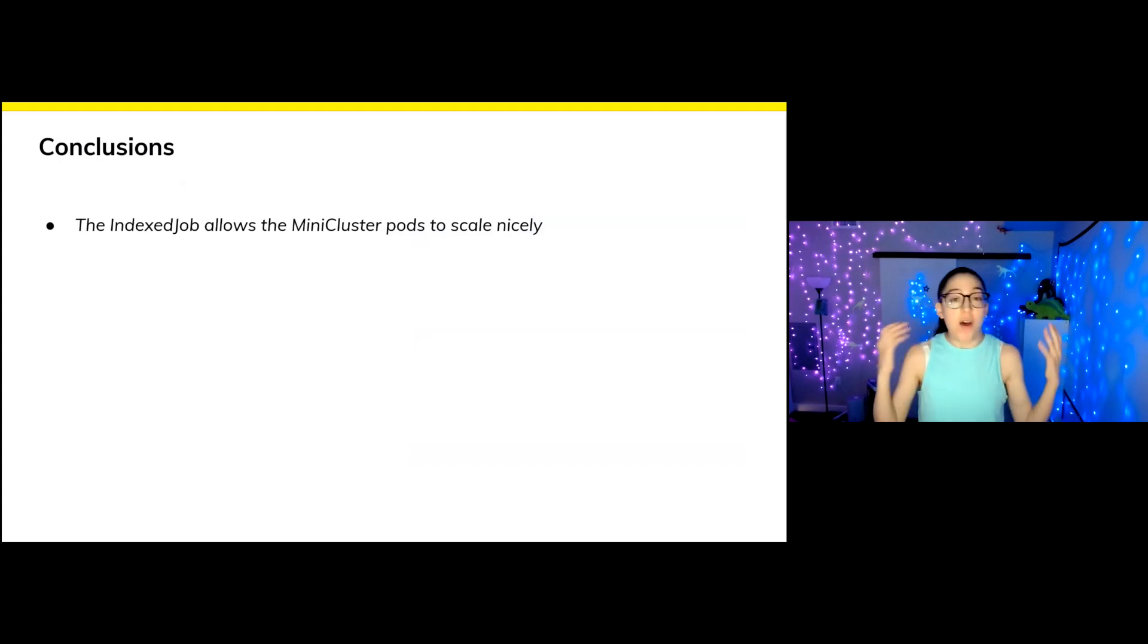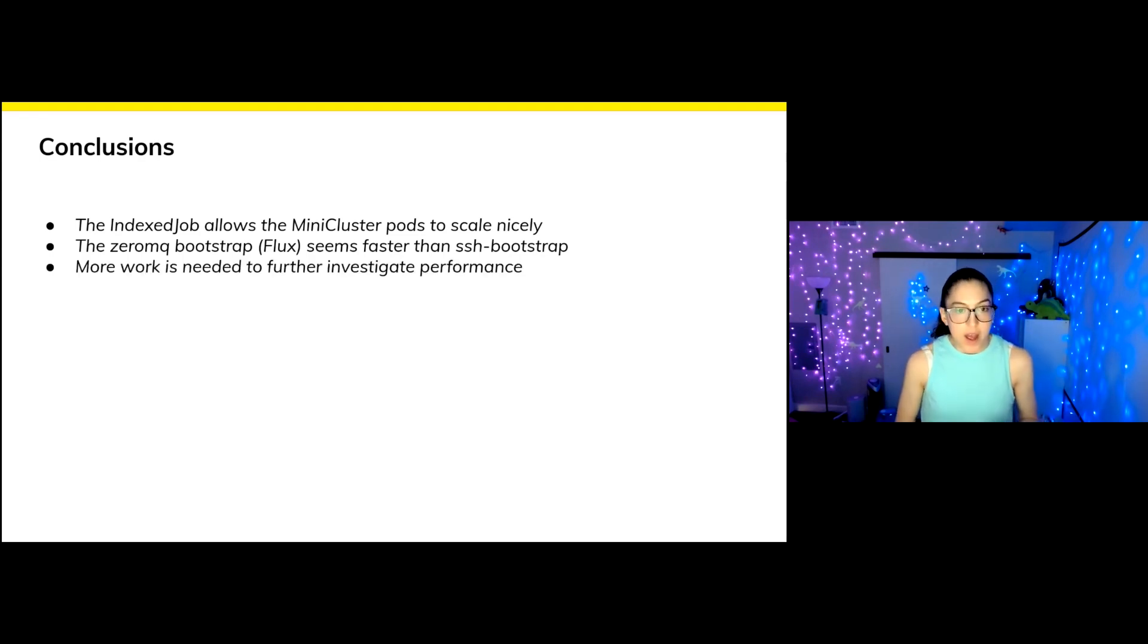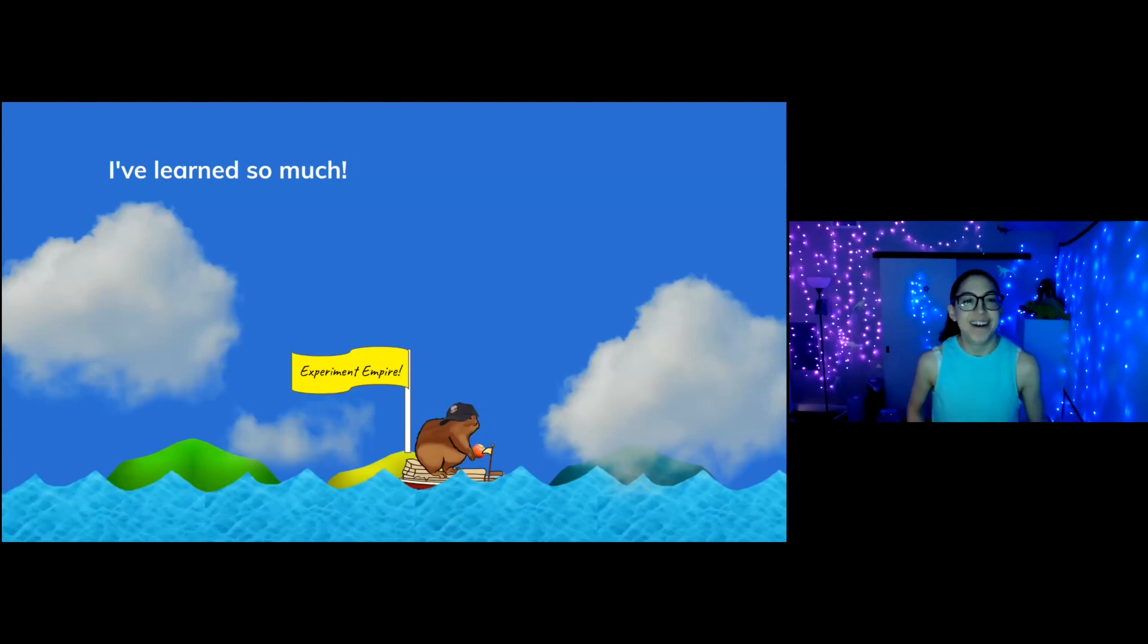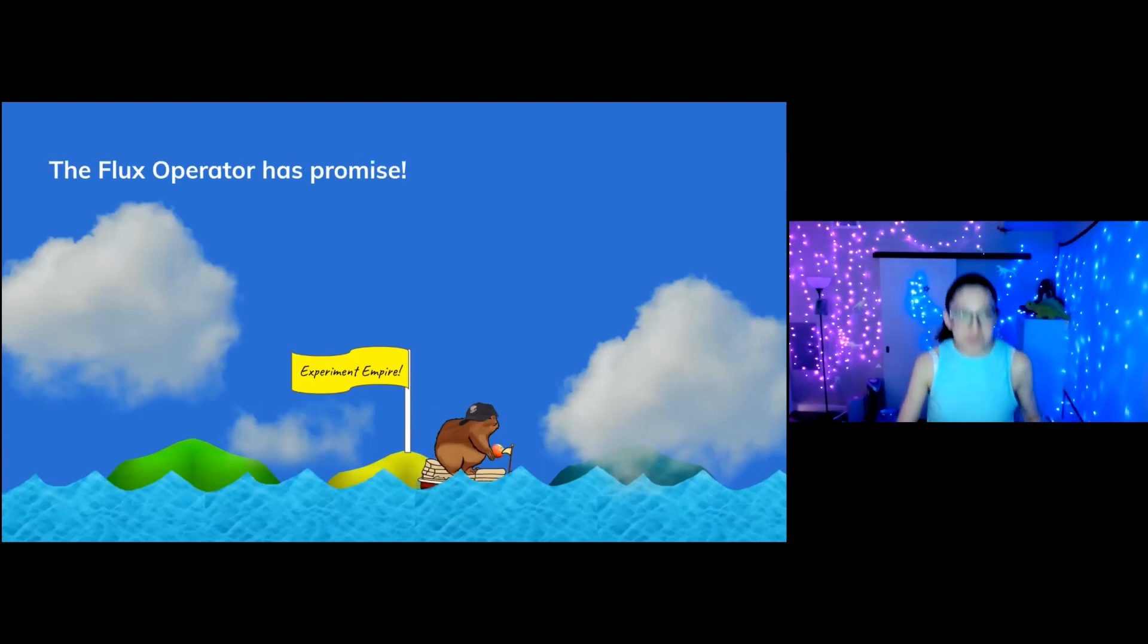So what did we learn? Well, we learned that the index job does allow the mini cluster pods to scale really nicely. Very happy about that. We think that flux's ZeroMQ bootstrap might be related to why it's a little bit faster because the MPI operator uses an SSH-based bootstrap. More work, of course, is needed to investigate performance. Like folks, LAMMPS is not it. And this might be the most important point of the entire talk. So listen up. The architecture of the flux operator allows for multiple jobs to be run on the mini cluster. So we avoid the infamous etcd API server bottlenecks, and it enables high throughput. And finally, we want to point out that the MPI operator does require that extra launcher node, and it could also benefit from using an index job. They seem pretty great to me.